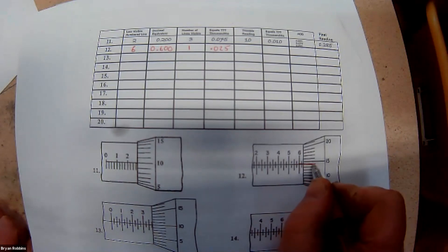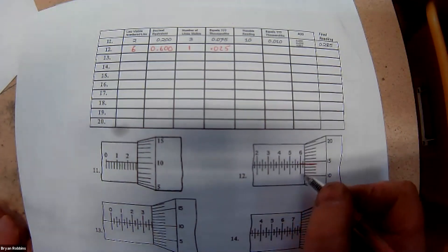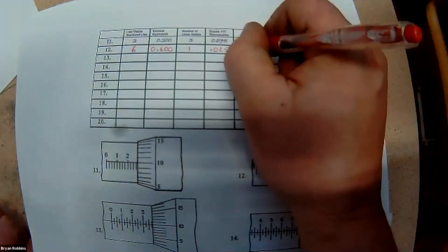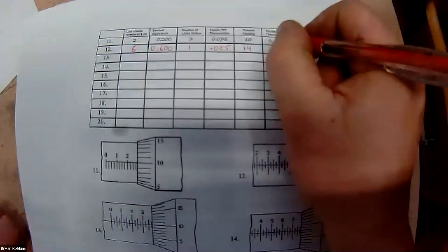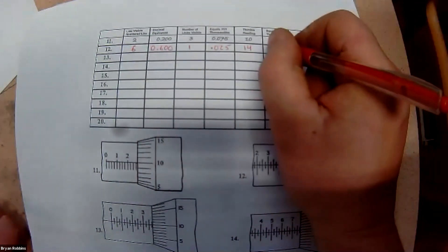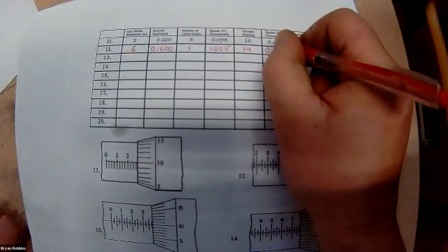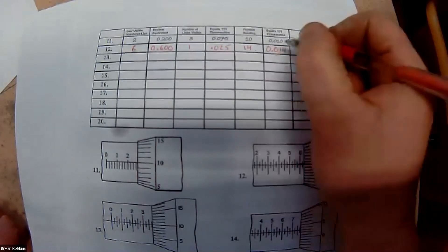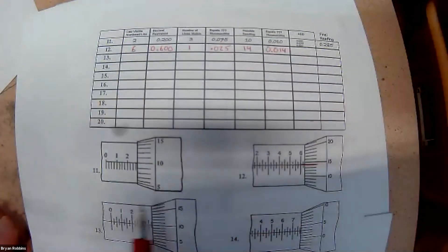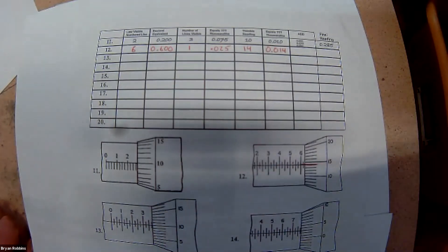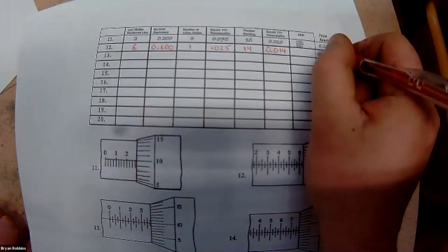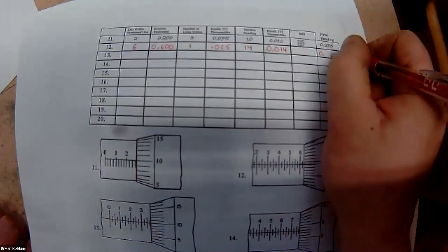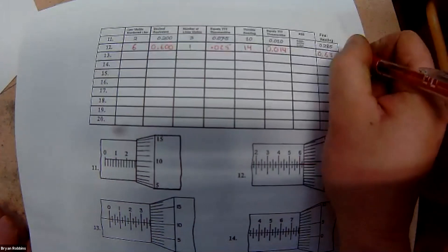What does that equal in thousandths of an inch? Well, that's 14 thousandths of an inch, 0.014. So, .600 plus .025 plus .014 gives us a final reading of 0.639.